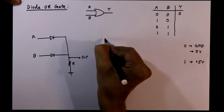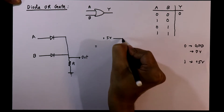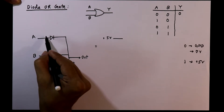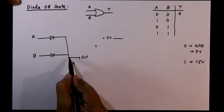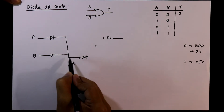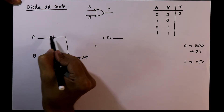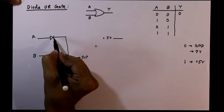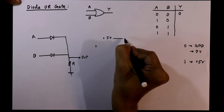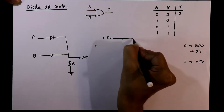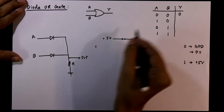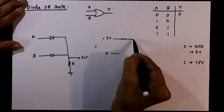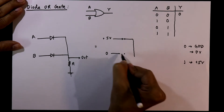For the second condition, A is plus five volts. Since we are applying plus five volts at this point, this side will be five volts and this side is zero volts because the pull-down resistor is connected. The anode side is higher than the cathode side, so this diode is working in forward bias and acts as a closed circuit. B is zero, low voltage, and here we already have five volts, so this diode is working as an open circuit.